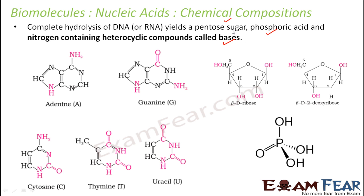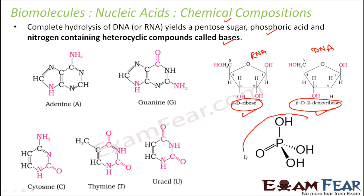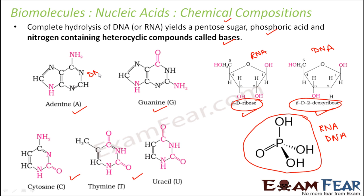When talking about the sugar, it can be a ribose sugar, which is present in RNA, or a deoxyribose sugar, which is present in DNA. The phosphate group is present in both RNA and DNA. The nitrogenous bases in DNA are adenine, guanine, thymine, and cytosine. In RNA, the same nitrogenous bases are present except thymine — instead, uracil is present. So adenine, guanine, cytosine, and uracil are present in RNA.